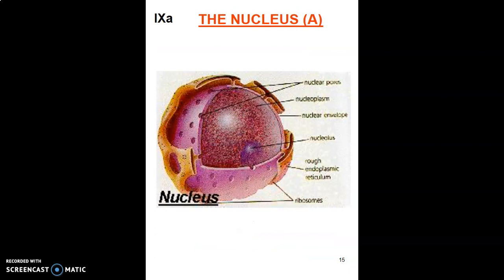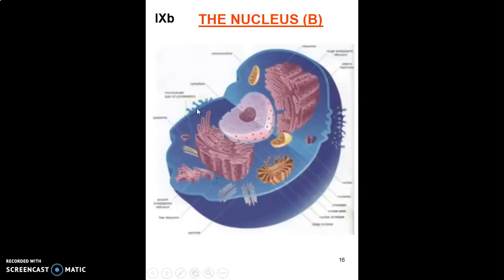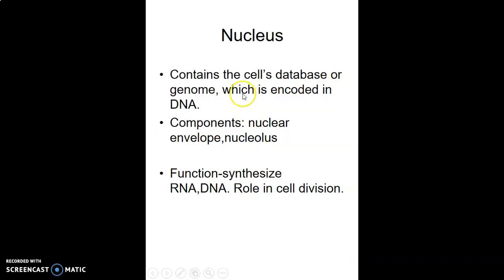Now looking at the structure of the nucleus: it contains a nuclear envelope which is not continuous and has pores around it. The nucleus contains the genomic material encoded as DNA, a nucleolus, and is covered by the nuclear envelope. Its main function is transcription — synthesizing RNA from the present DNA — which helps in cell division.